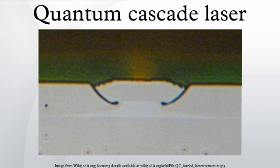The second waveguide type is a buried heterostructure. Here, the QC material is also etched to produce an isolated ridge. However, new semiconductor material is grown over the ridge. The change in index of refraction between the QC material and the overgrown material is sufficient to create a waveguide. Dielectric material is also deposited on the overgrown material around the QC ridge to guide the injected current into the QC gain medium. Buried heterostructure waveguides are efficient at removing heat from the QC active area when light is being produced.